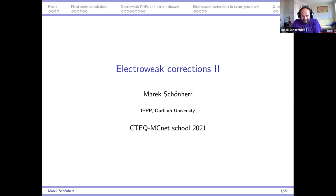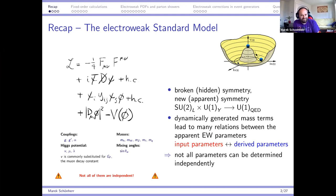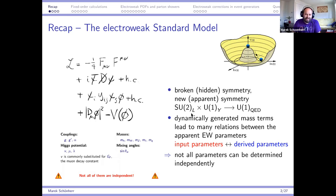Welcome back to the second lecture on electroweak corrections. Let's start with a brief recap of the main points from yesterday. We looked at the electroweak Lagrangian before and after symmetry breaking, and discussed how the breaking of SU(2) × U(1) into the remaining U(1)_QED is basically just hiding the symmetry that was originally there.